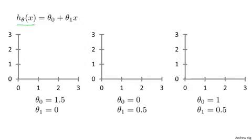I know some of you will probably be already familiar with what I'm going to do on this slide, but just to review, here are a few examples. If Theta 0 is 1.5 and Theta 1 is 0, then the hypothesis function will look like this. Because your hypothesis function would be h of x equals 1.5 plus 0 times x, which is this constant value function that's just flat at 1.5.